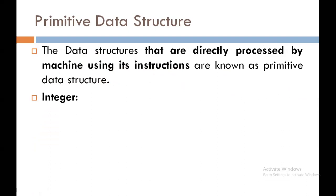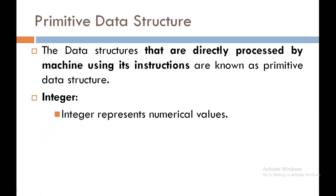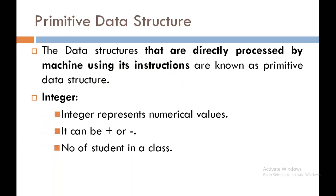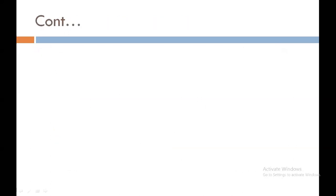The first primitive data structure is integer. Integer represents numerical values. It can be positive or negative. For example, number of students in a class, or student marks. Integer numbers are represented using sign magnitude method and one's complement method.